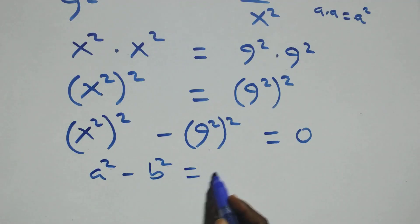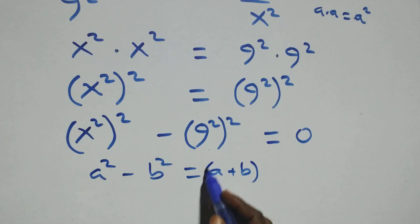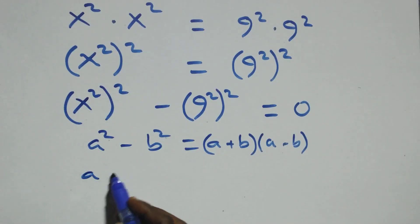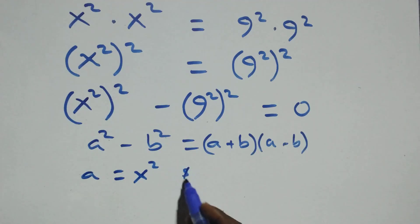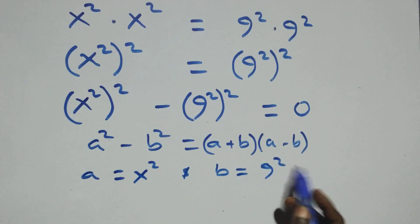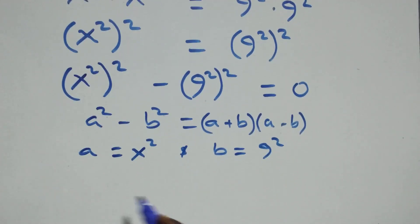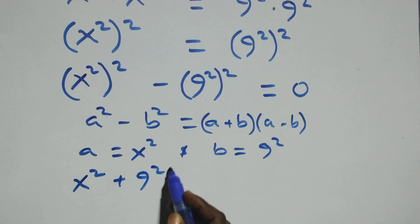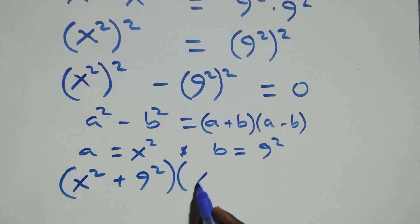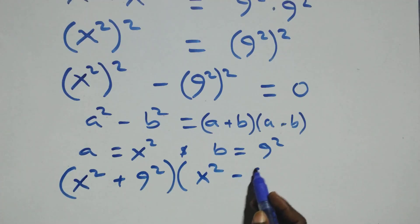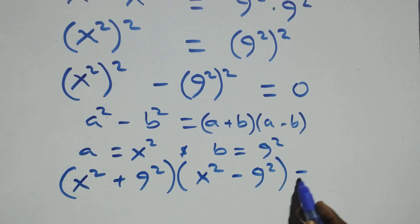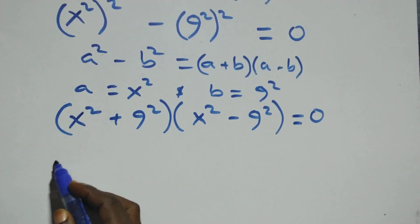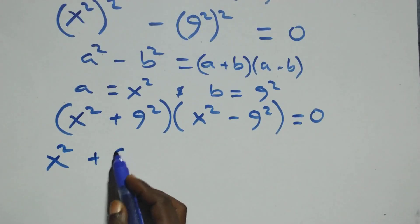This follows the difference of squares identity: a² minus b² equals (a + b)(a − b). Here a stands for x² and b stands for 9², so this becomes (x² + 9²)(x² − 9²) equals zero.